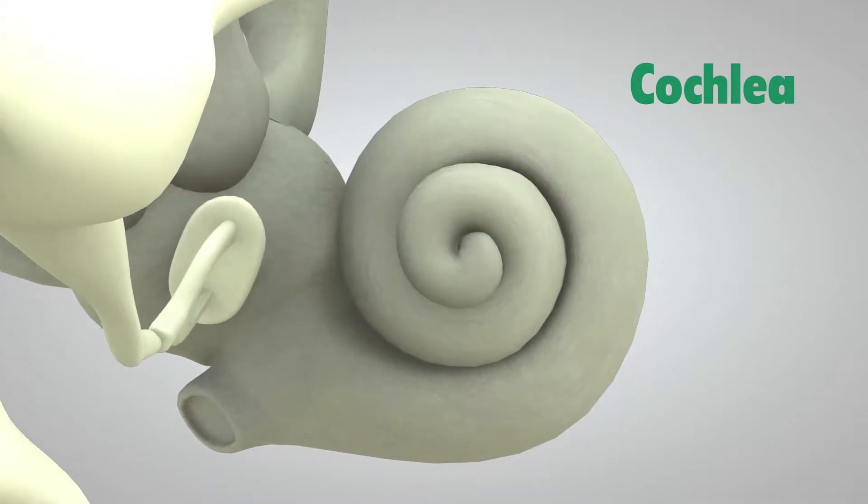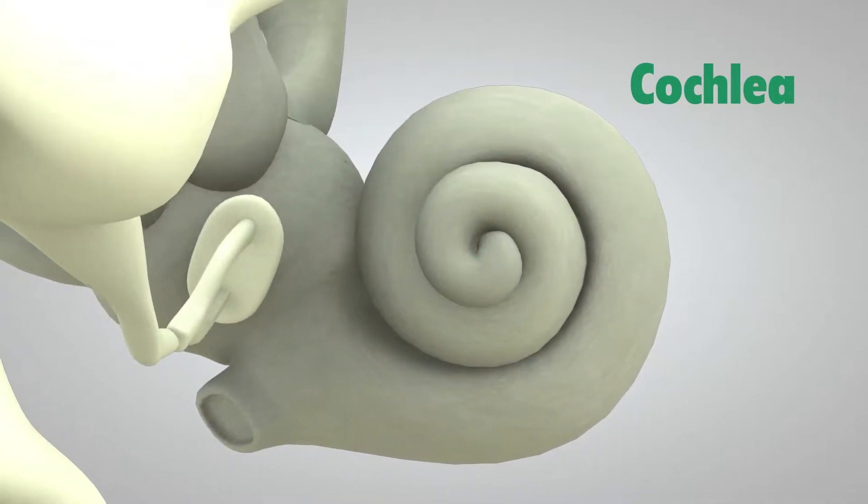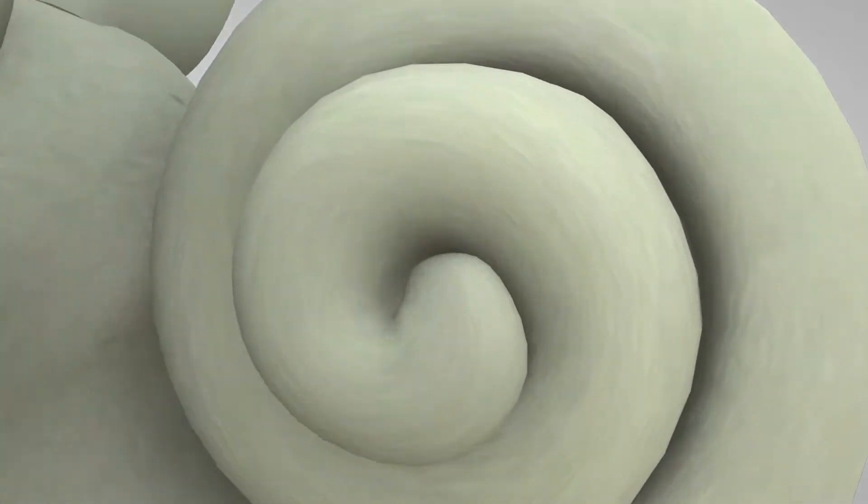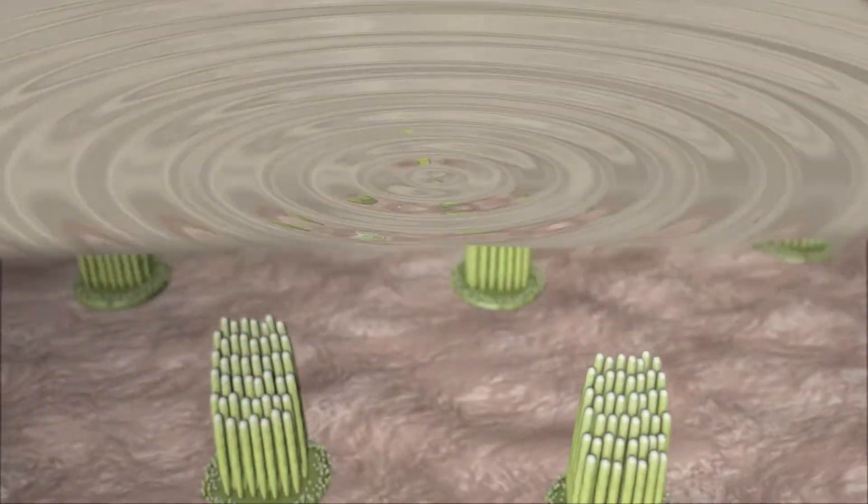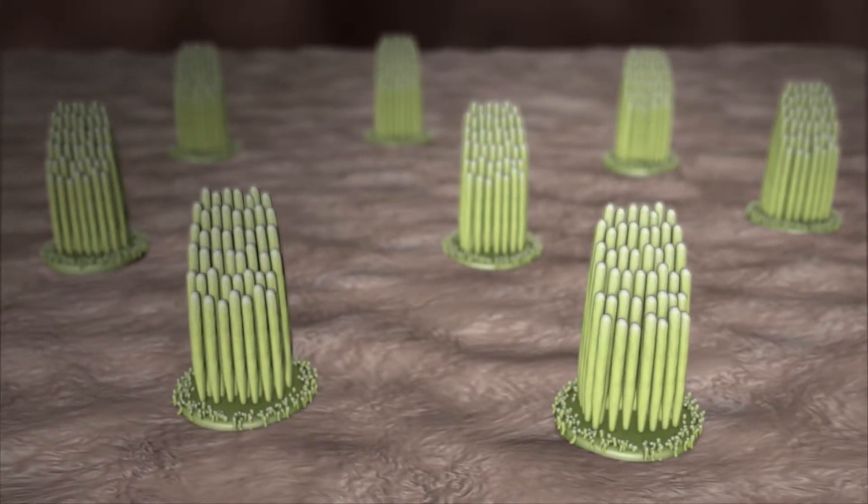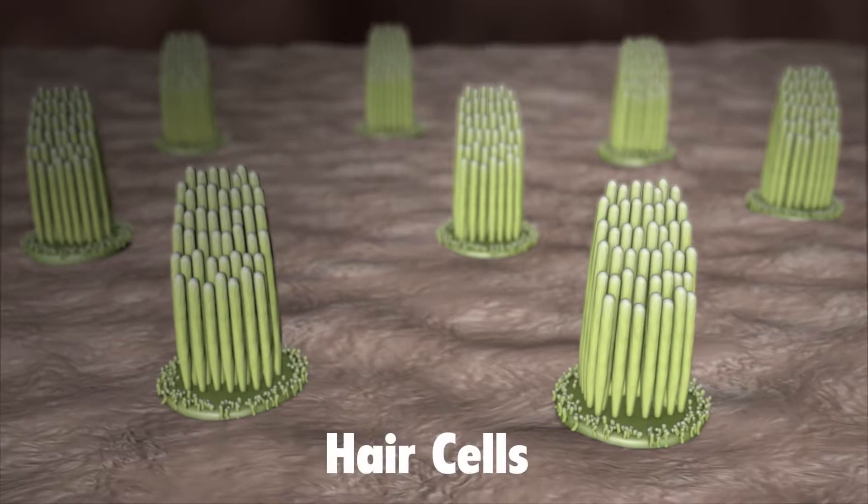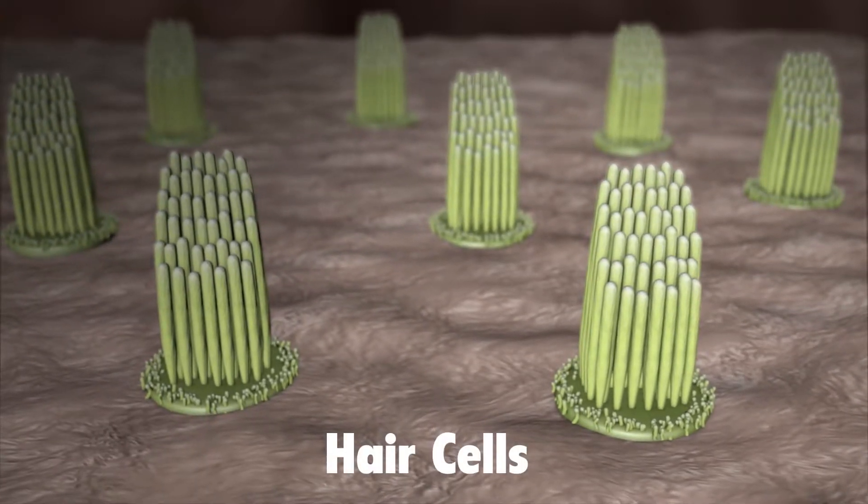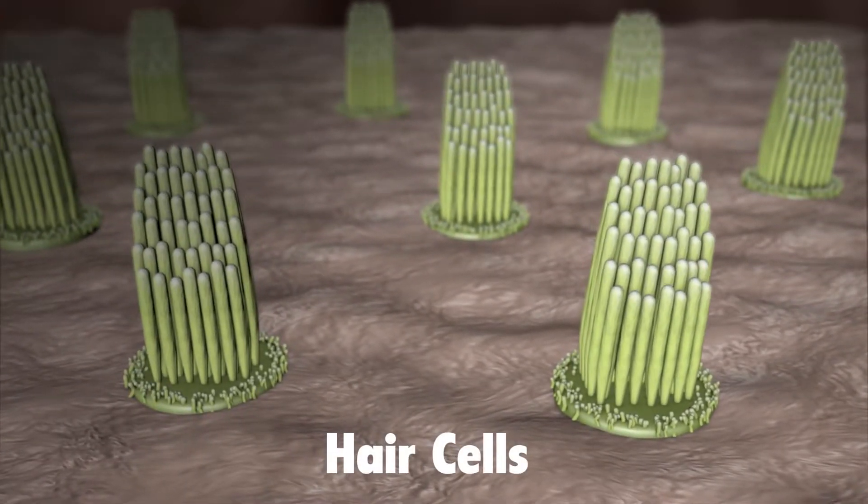The cochlea is shaped like a snail and is the size of a garden pea. It is filled with fluid, and the sound vibrations make this fluid ripple, which creates waves. Hair-like structures called stereocilia sit on top of hair cells and are grouped together as hair cell bundles inside the cochlea.